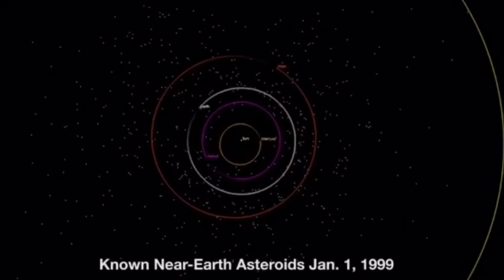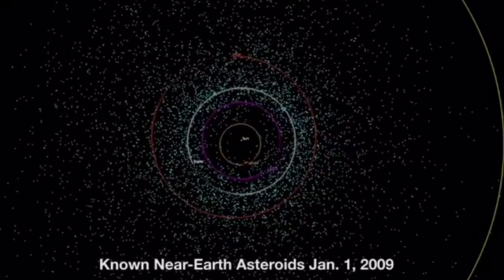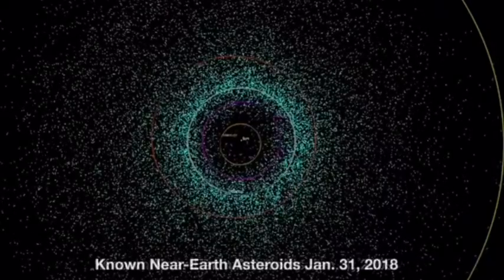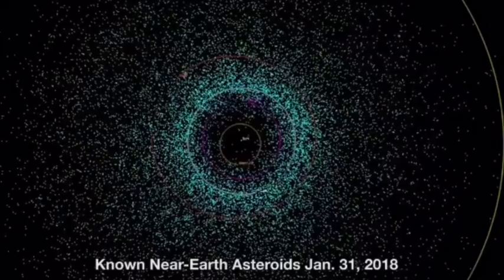If the upper estimate is correct, FP 118 could be an absolute cataclysm if it were to hit the Earth. The giant space rock will skim the planet at a safe distance of 12.3 lunar distances (LD), or 12 times the distance from the Earth to the Moon.